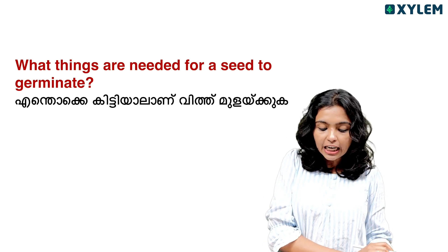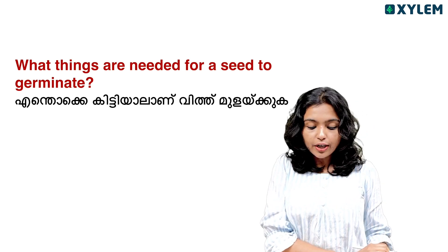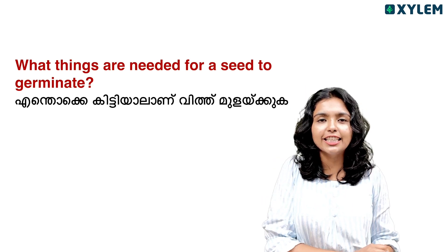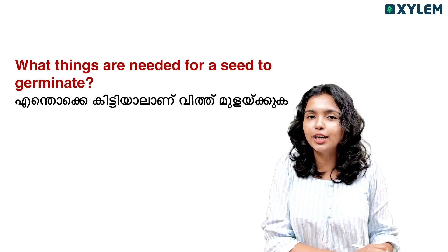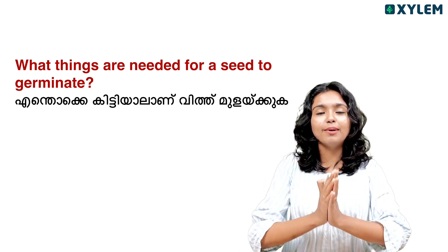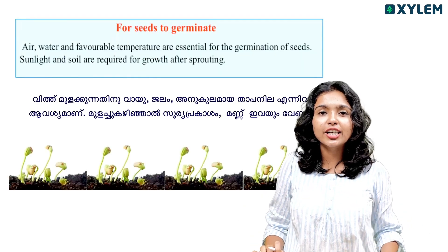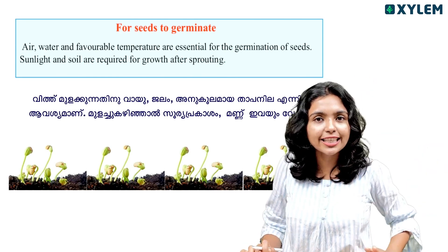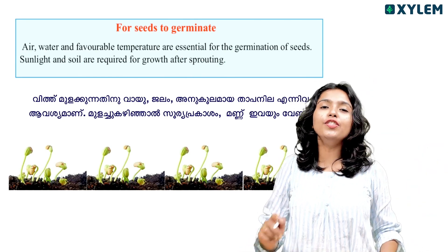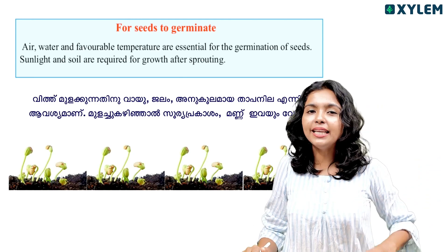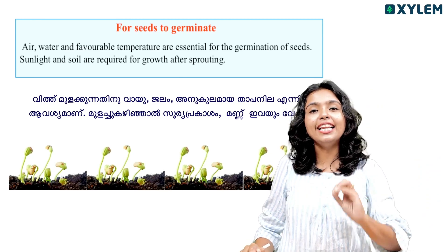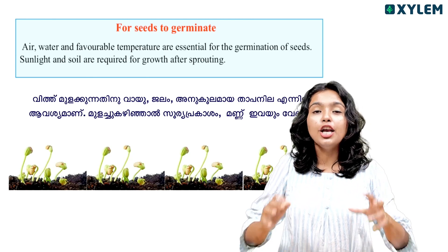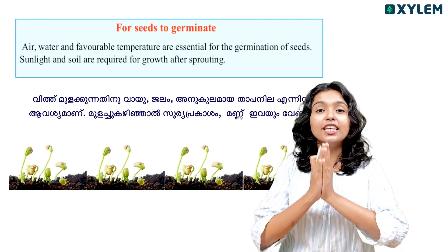The first question is: what things are needed for a seed to germinate? Three things are needed: water, air, and temperature. These three things are called the conditions for germination.